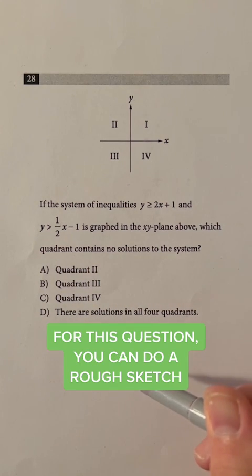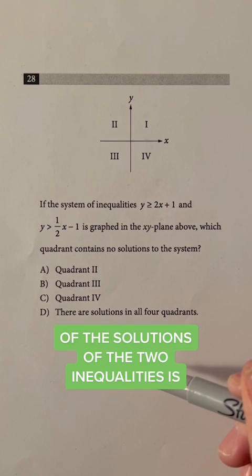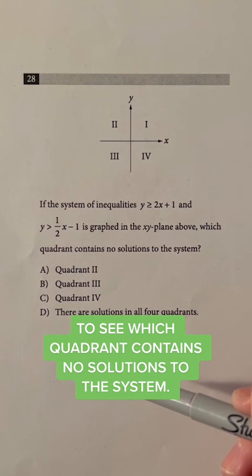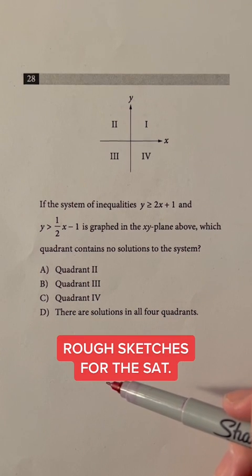For this question, you can do a rough sketch of the graphs of the two inequalities and then determine where the intersection of the solutions of the two inequalities is to see which quadrant contains no solutions to the system. It's very important to be able to do rough sketches for the SAT.